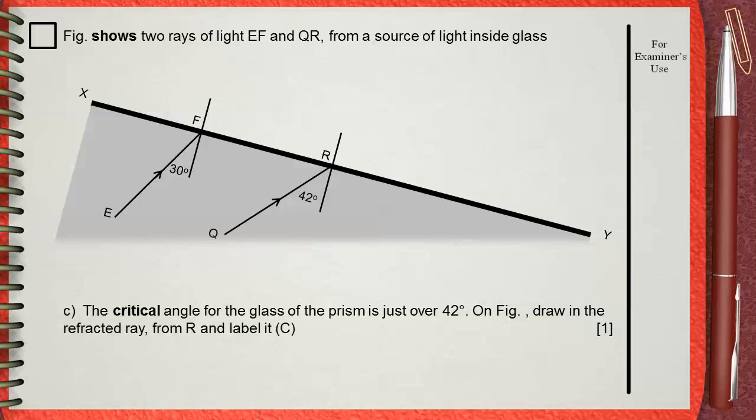The question says that the critical angle for glass is just over 42. We will consider it 42. This is accepted in this level. If the critical angle is 42, your light ray will refract along the surface. This is what will happen here and we will label it C.